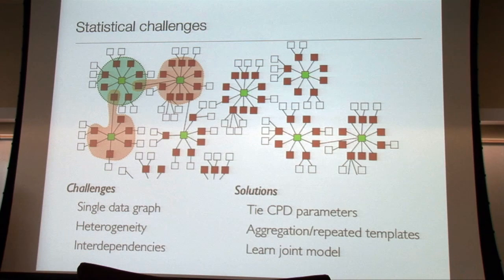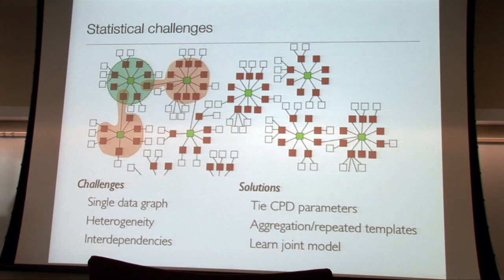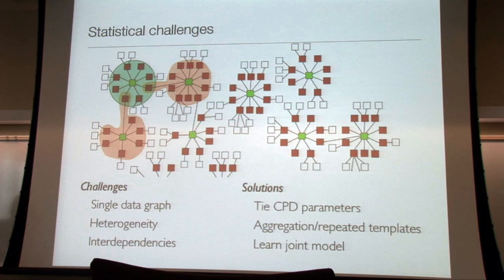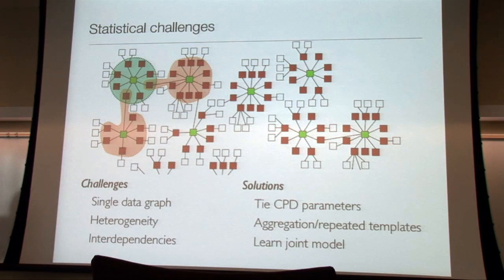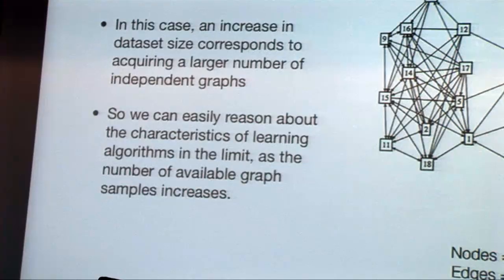The last challenge is that you have dependencies between instances, so you can't estimate parameters the same way as with independent examples. One way to deal with that is learning a joint model. This brings up issues in terms of computational efficiency versus accuracy trade-offs, because as you learn a joint model, the search space grows with the size of the data — making approximations might result in an okay model with a large increase in computational efficiency.